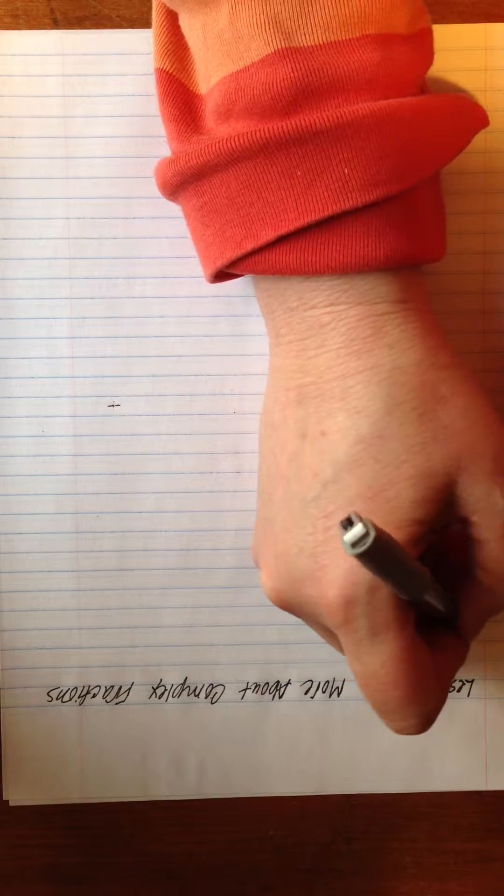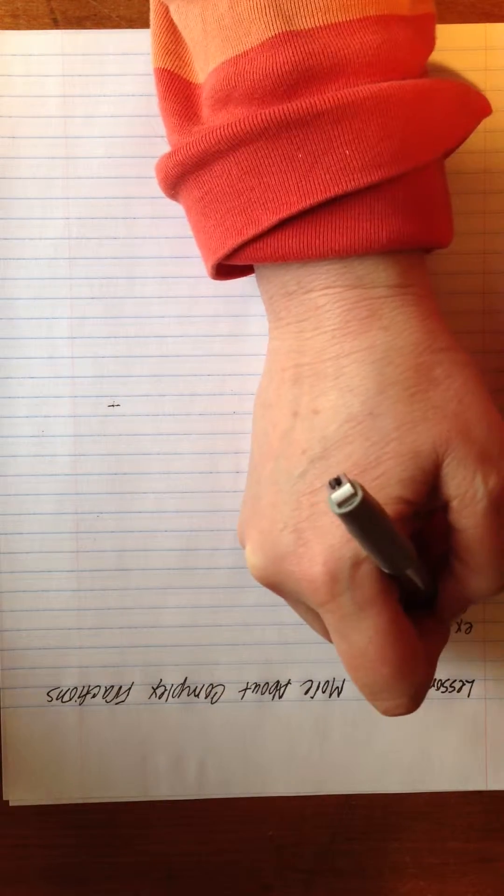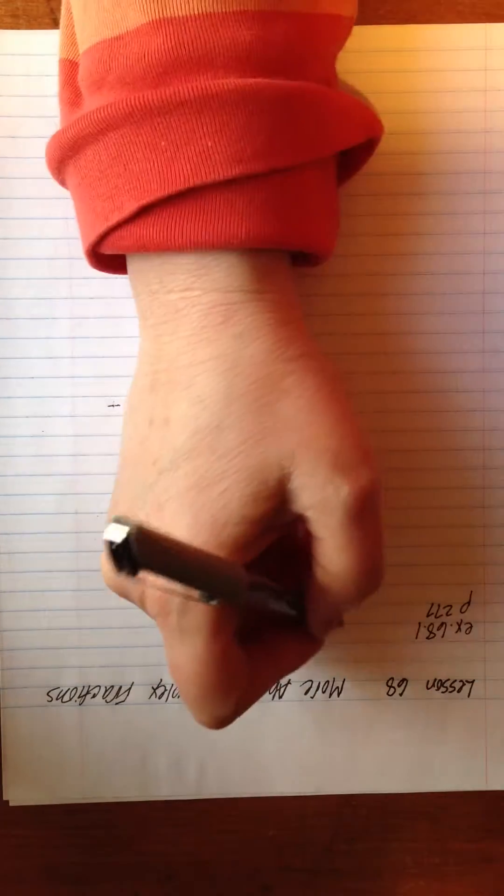Remember that a fraction is considered a complex fraction if it has more than one line in it, more than one bar. So let me show you an example. 68.1, I'm on page 277. Here's an example of a complex fraction.